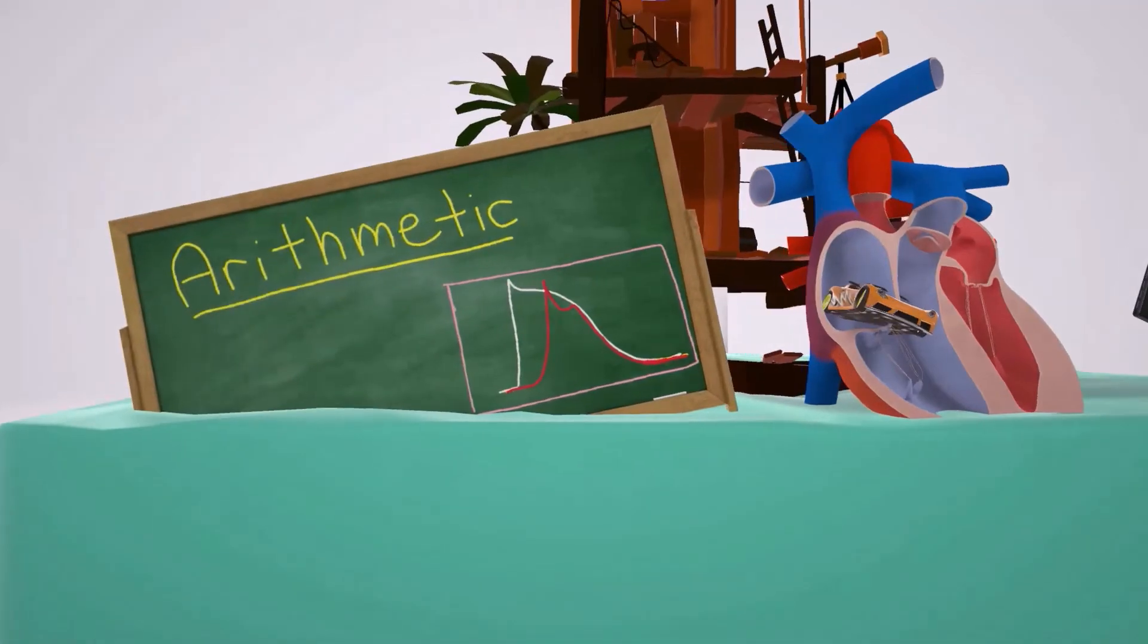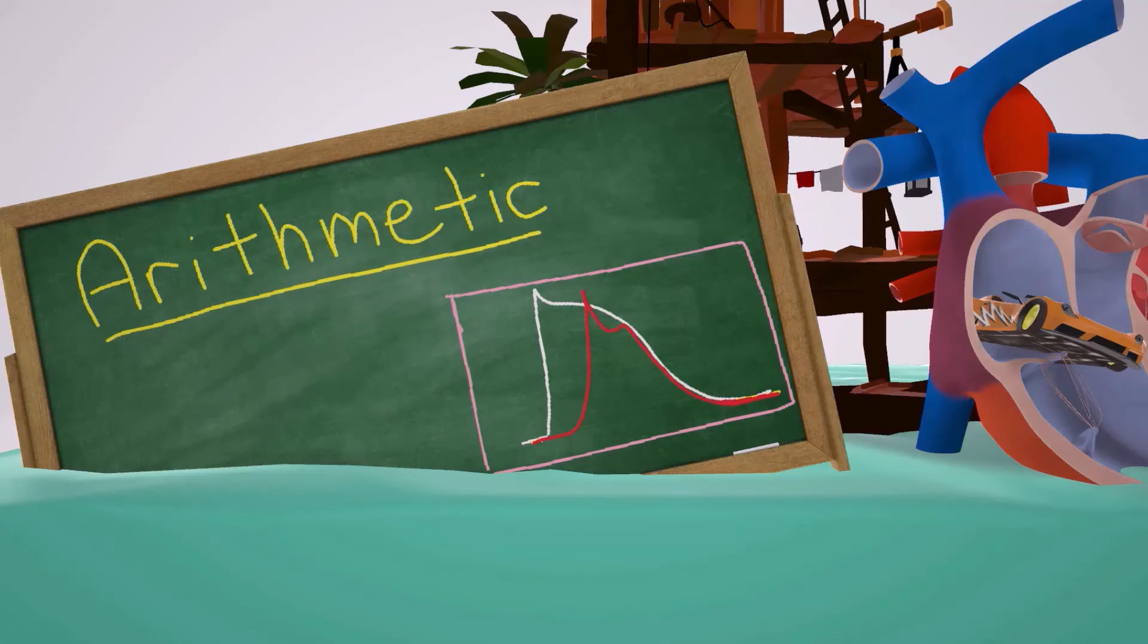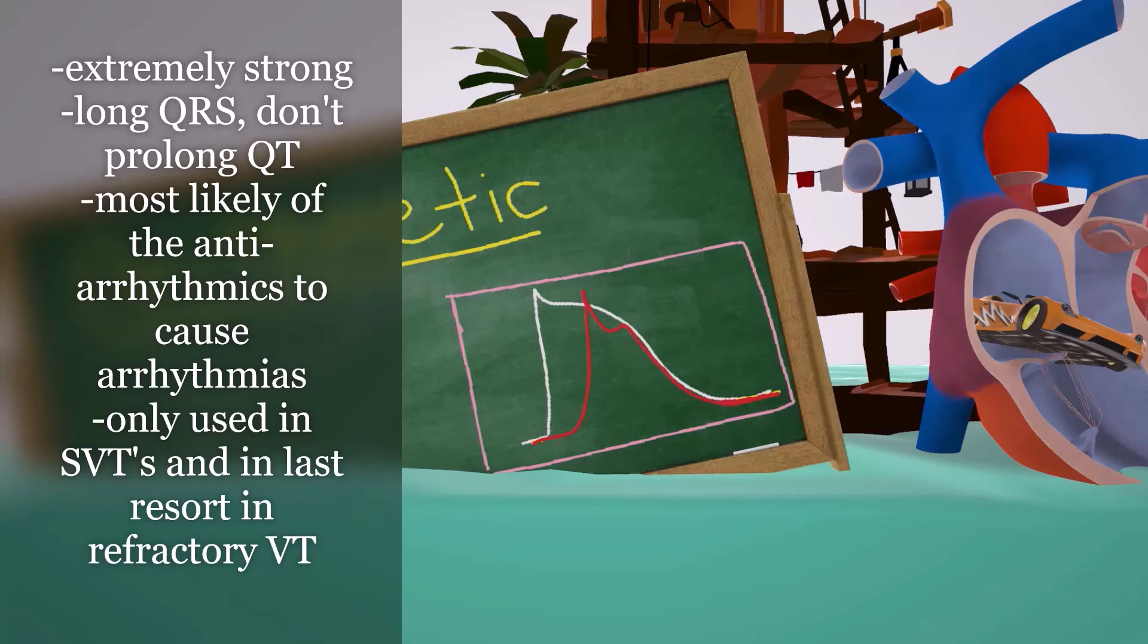It has no effect on the effective refractory period in the Purkinje and ventricular tissue. On this graph over here, we see the dramatic decrease in slope at phase zero, and this is reflective of the extreme strength of the class 1Cs. And just as a side point, on EKG they can cause a long QRS, but they do not prolong the QT. And being strong, then the most likely of the anti-arrhythmics to cause arrhythmias.